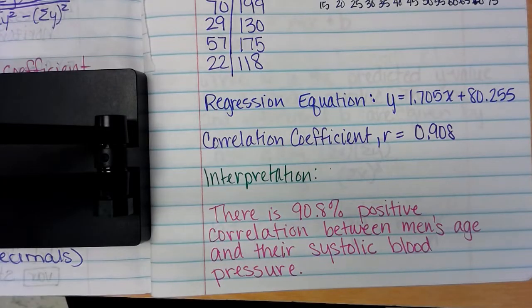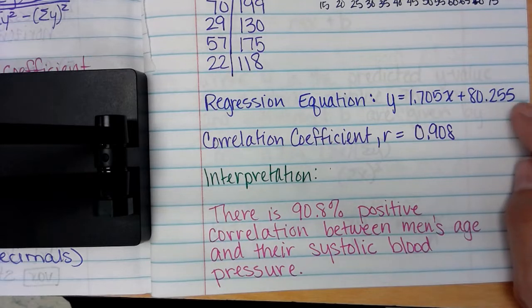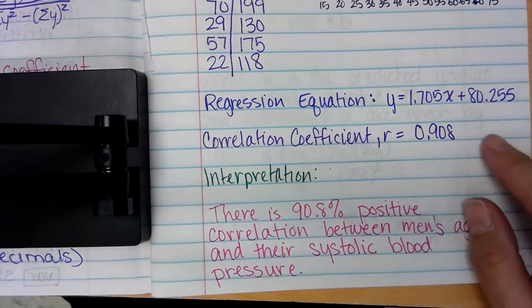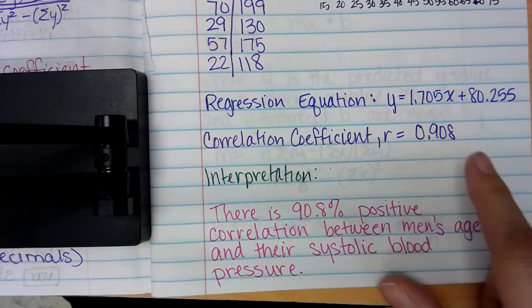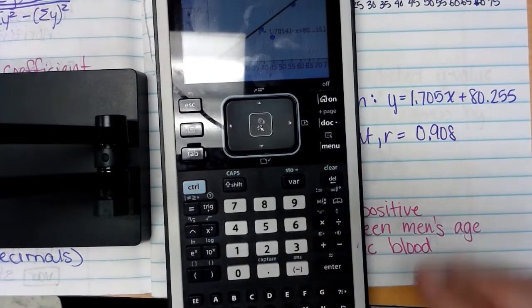So using the calculator, we found the regression equation is 1.705 times x plus 80.255. The calculator gives you much more digits behind the decimal than I am writing down - three decimal places is plenty.